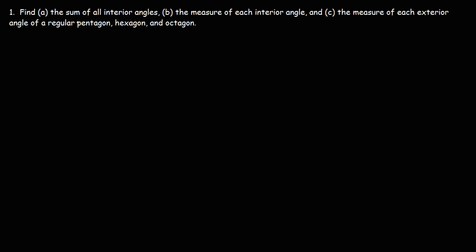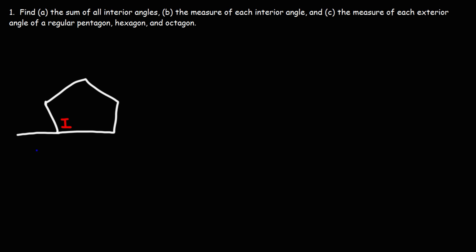Let's start with the pentagon. A pentagon is a polygon with five sides. Because we're dealing with a regular pentagon, all sides are equal and all of the interior angles are the same. This is the interior angle, and if we extend one of the sides, we can get the exterior angle. Notice that these two angles form a linear pair, so they must add up to 180.